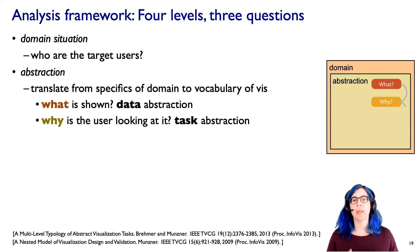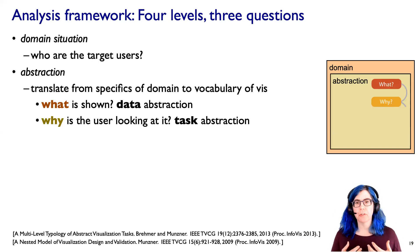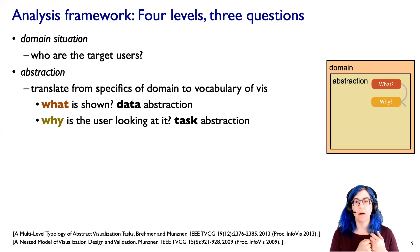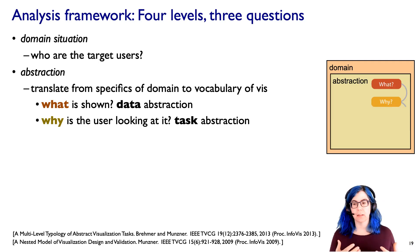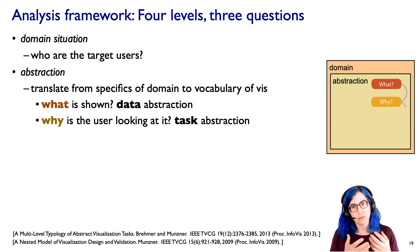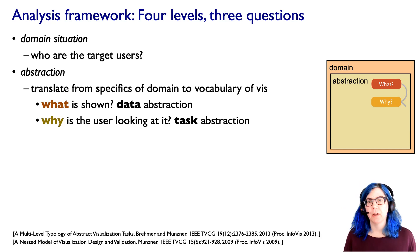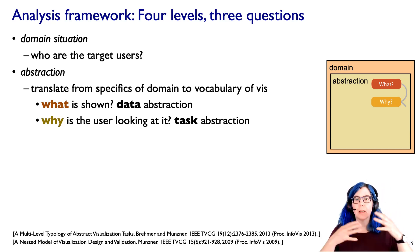That's where we get to the next level, the abstraction level. What we want to do is think about the visualization issues in a way that's agnostic to the domain — a generic vocabulary of visualization. With the abstraction level, there are two main things we think about: what is being shown, the data abstraction, and why is the target user looking at it, the task abstraction. We might find that two people from physics and finance are really doing something structurally very similar, but maybe two biologists sitting next to each other in the same lab are actually doing very different things, even though they're using similar language. So we really need this abstraction level to reason about things in a domain-independent way.